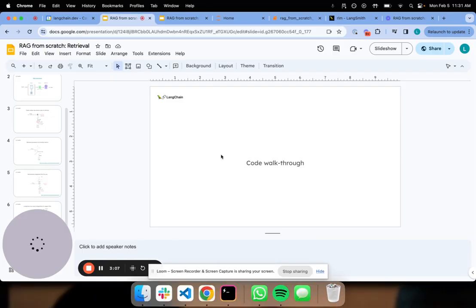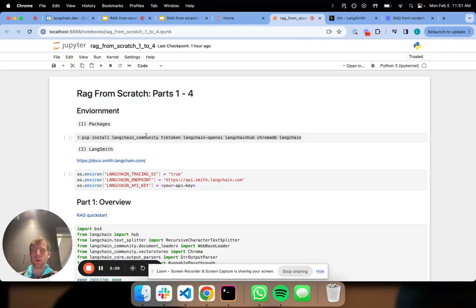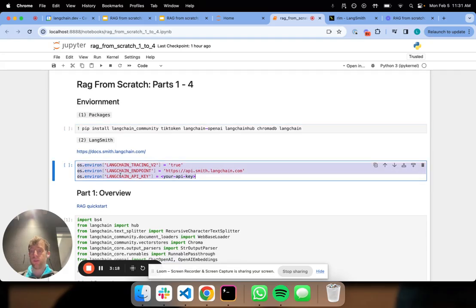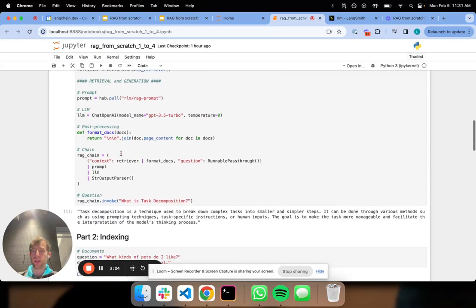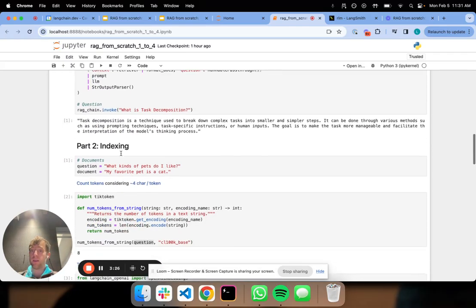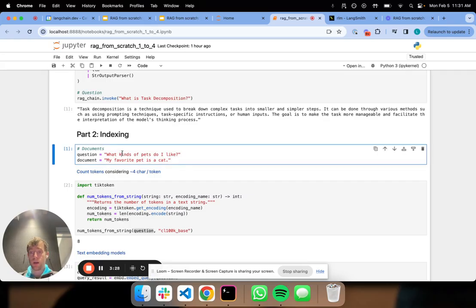So now I'll show a bit of a code walkthrough. So here we defined, we had walked through this previously. This is our notebook. We've installed a few packages. We've set a few environment variables using Langsmith. And we showed this previously. This is just an overview showing how to run RAG, like kind of end to end. In the last short talk, we went through indexing.